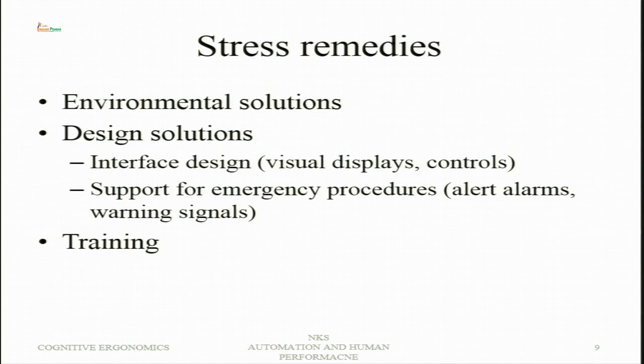Support for emergency procedures — for example, alert alarms — should be presented prior to the possibility of the system going into a risky state, such as warning signals. Then training: if an individual is exposed to particular complex situations in training, they learn how to handle stress. Individual strategies are developed, and because of training there will be a reduced level of arousal under similar conditions. Training can help a lot because specific procedures get developed for those conditions.